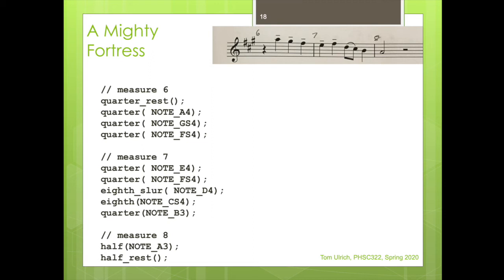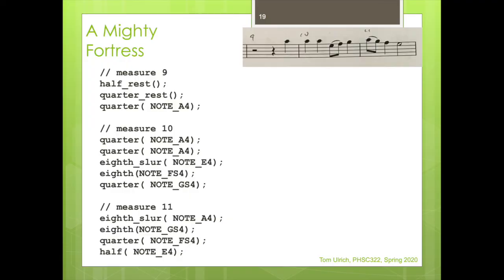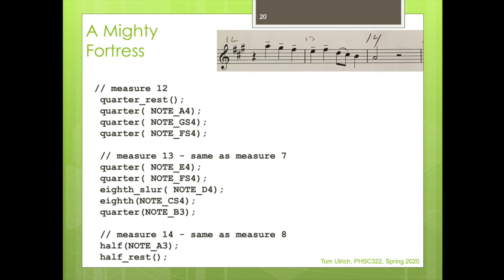But measure seven, I've got an E and then I got an F sharp as a quarter note. And then I slur. I have a D going down to a C sharp. And then you notice the slurs on the first part because it's after the D. That's where I slur it. And then the C is regular. And then the B. And then in measure eight, I have a half note of an A. And then I have a half measure of rest. And then in measure nine, we have a half rest and a quarter rest. And then I have the note A four, measure ten, A four, A four. And then I have a slur, E four as an eighth note, slurring up to F sharp. And then I have G, measure eleven. I've got a slur again. I've got an eighth note in A and then an eighth note for G sharp. And then quarter note for F sharp. And then a half note for E.